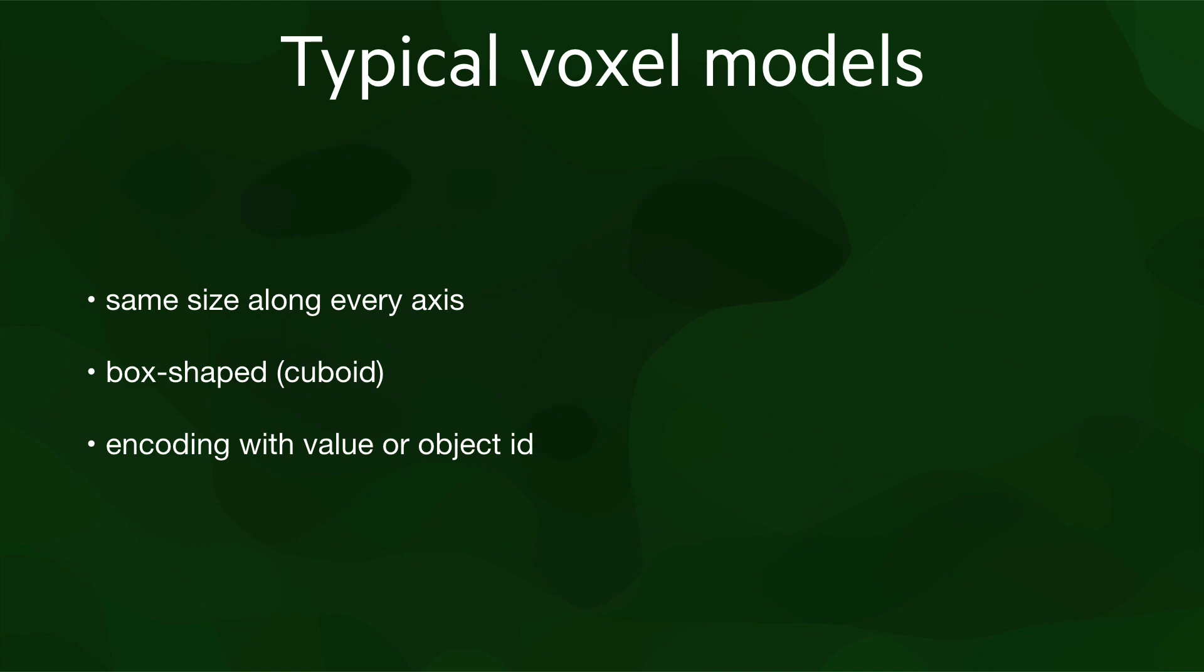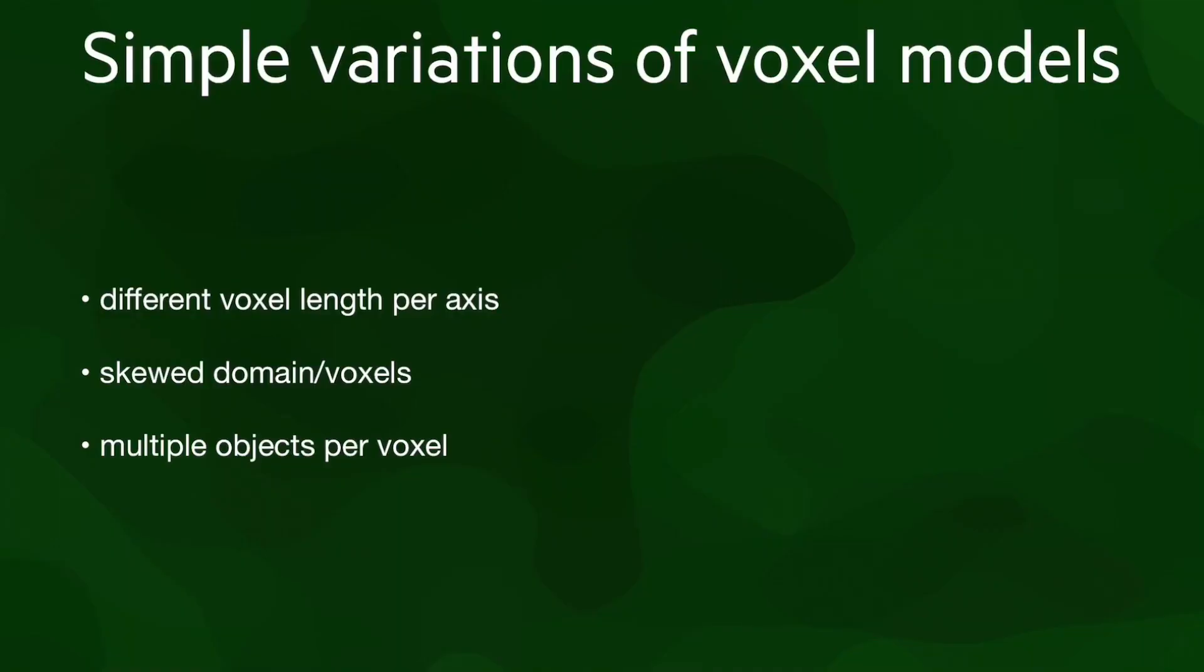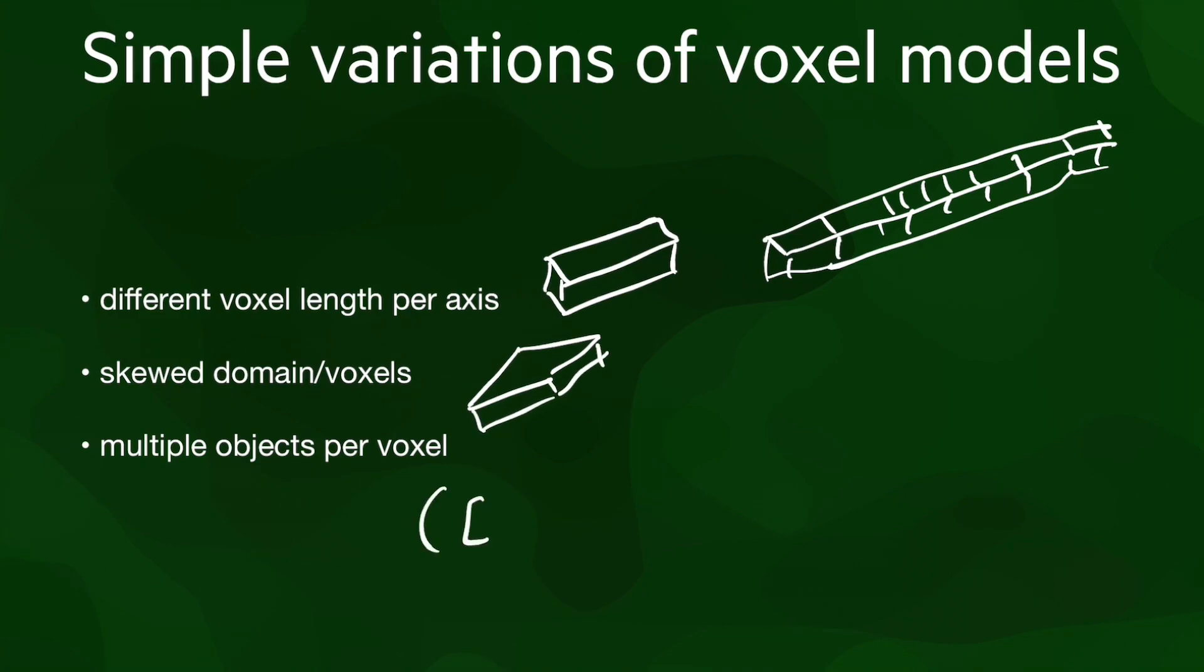Departing from these typical models, we can describe the most common variants based on how they differ from the typical ones. The length of the voxel can be different along every axis, or the size can even differ within an axis, both of which are useful when the resolution of the data is not the same everywhere and in all directions. The voxels and the domain can be skewed parallelepipeds with axes that are not perpendicular to each other, and multiple values or objects per voxel can be encoded at once.